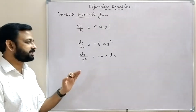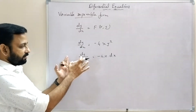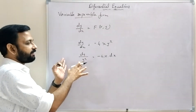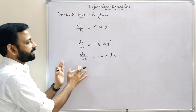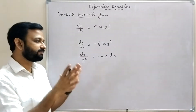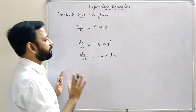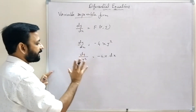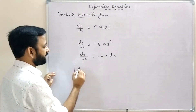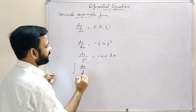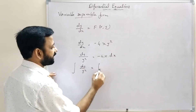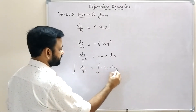Now we have separated y and dy on one side, and x and dx on the other side — that is variable separable form. Now we can integrate both sides: integral dy/y² = integral -4x dx.